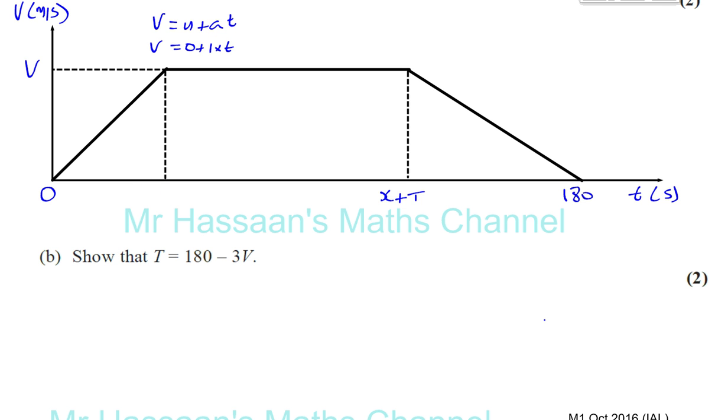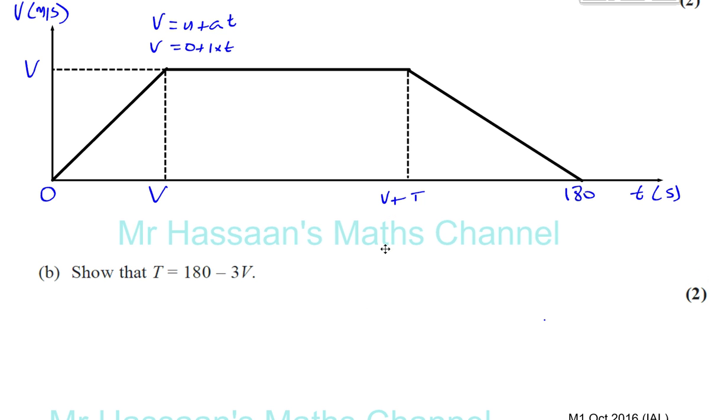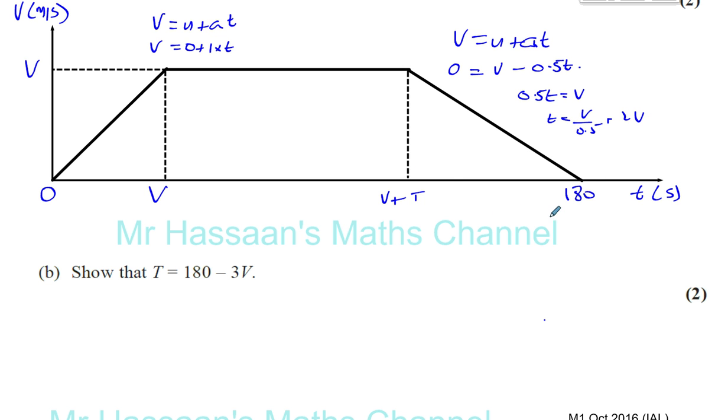So we know that that must be V in terms of V because the time is in terms of V. And so this must be V plus T because from there to there it's going at a constant speed for T seconds. And this 180, in terms of V, I know there's going to be 2V because the acceleration is a half, so it's going to take twice as long. But in case you want to use V equals U plus AT again, you can do that. You want to find the time it takes to come to rest this time. The initial velocity is V and the acceleration is negative 0.5. So, if you think about this now, you're going to have 0.5 T equals V. So T is equal to V divided by 0.5, which is 2V. So this is going to be, all together, 3V plus T.